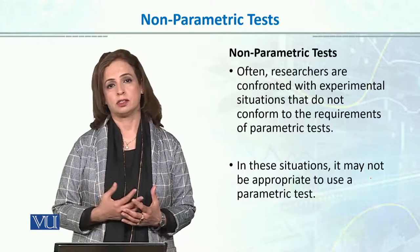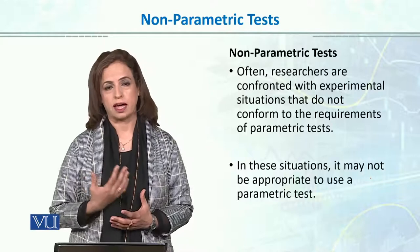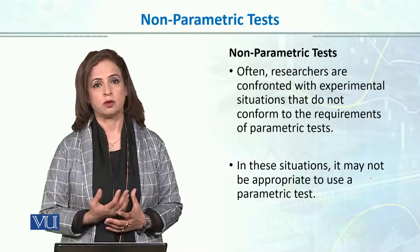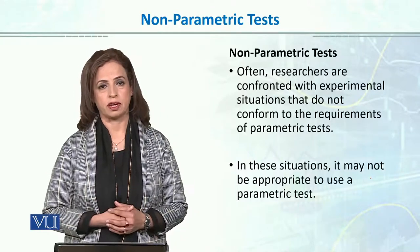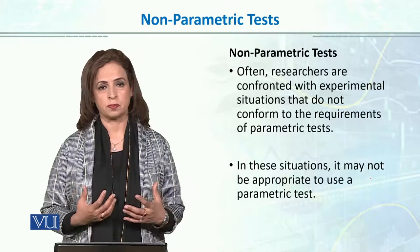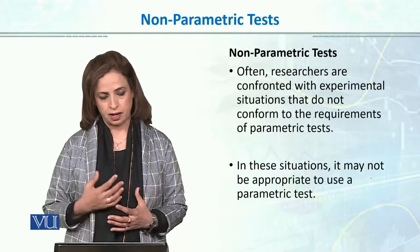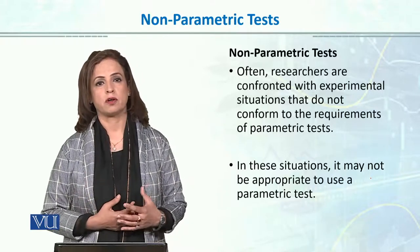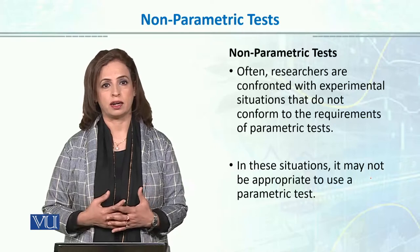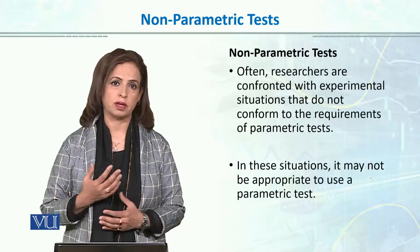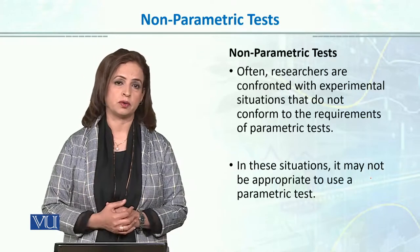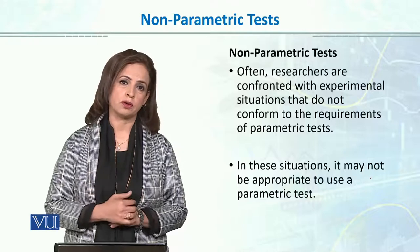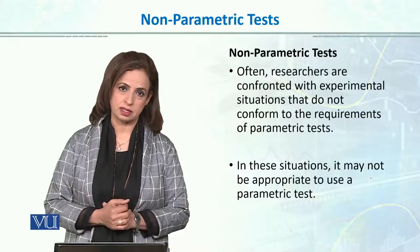For example, the underlying distribution should be normally distributed, then homogeneity of the variances in the groups, etc. Being a student of psychology or social sciences, you are confronted with many situations when you are restricted and cannot use parametric testing.